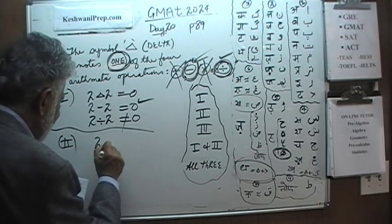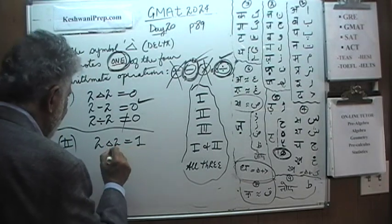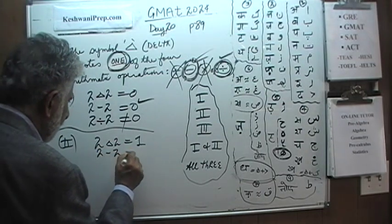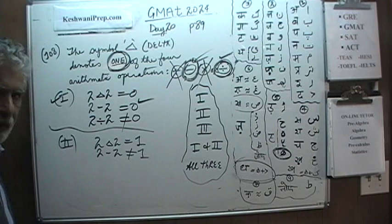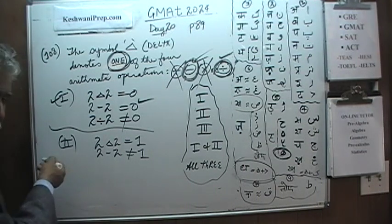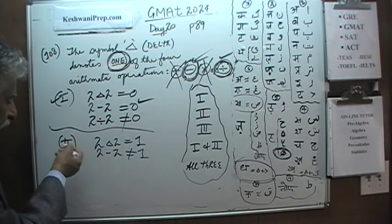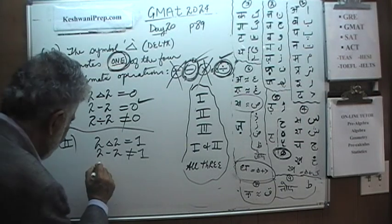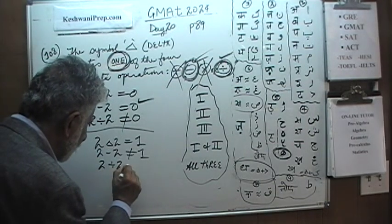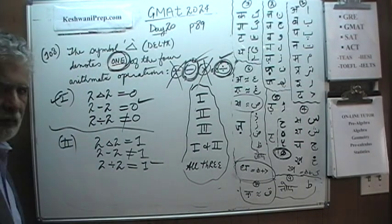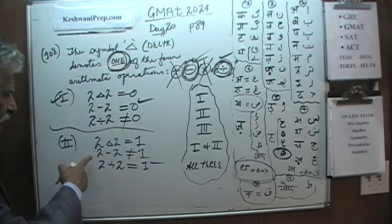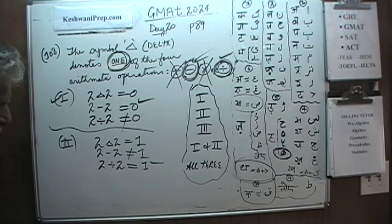And since we do not know whether this one operation they are talking about is subtraction or division, we do not know that. Which means this is a possible candidate. The first statement is something that may be true or may not be true, depending on which one it is that they are talking about. Let's look at the second one. The second one says 2 delta 2 is equal to 1. Again, 2 minus 2 does not equal 1. It does not work for it. Even though we do not want to go any more, we know 2 is not going to work. But just to show you, 2 divided by 2, 2 divided by 2 on the other hand does work.